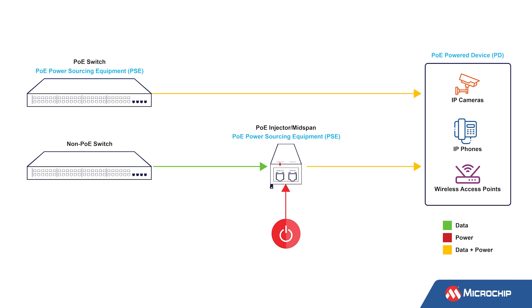Manufacturers such as wireless computers or IP camera manufacturers usually offer a single-port mid-span as a powering option — just like when you buy a PC you get a power bar with it. When you buy an IP camera, you have an option to get a PoE mid-span to power that camera.